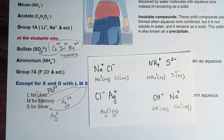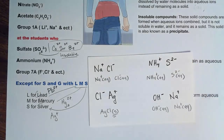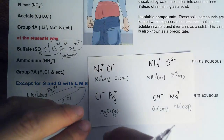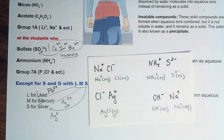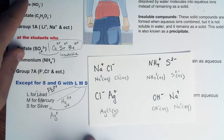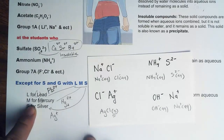That's how we know if two solutions of different ions, when mixed together, will make a precipitate based on the solubility rules.